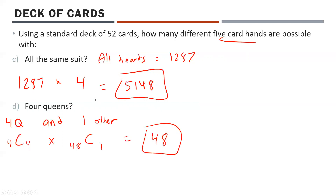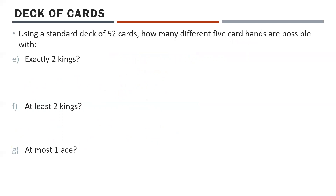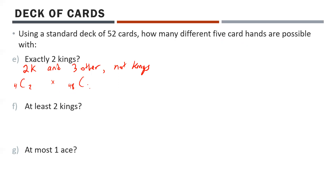What about exactly two kings? That means two kings and three other cards that are not kings. We choose two from four kings — 4C2 — times three from the 48 non-king cards — 48C3. Throwing that in the calculator gives 103,776.